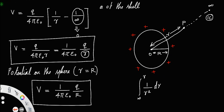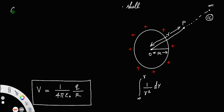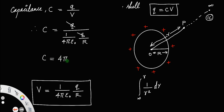Now we have to find the capacitance of the spherical shell. By definition, capacitance C is equal to charge divided by potential. We have Q equal to capacitance into potential, so capacitance is, by definition, charge divided by potential. Therefore, C is equal to charge q on the sphere divided by the potential we already found: 1 by 4π epsilon-0 times q divided by R. Cancelling q, and bringing 4π epsilon-0 R to the numerator, C equals 4π epsilon-0 R.